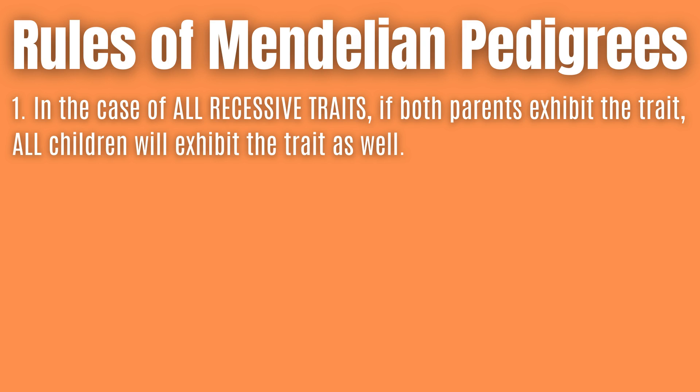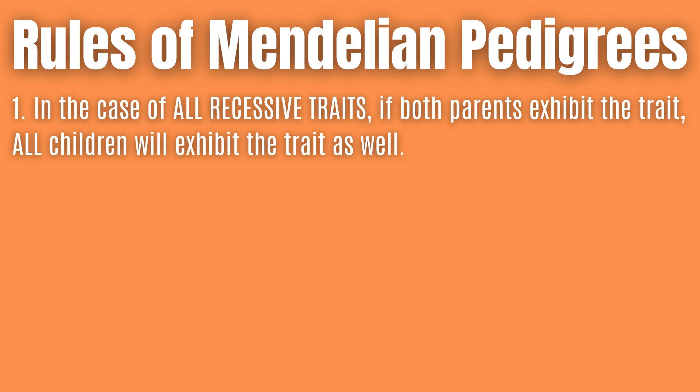Some basic rules of Mendelian pedigrees include that in all cases of recessive traits, if both parents exhibit the recessive trait, all children will also exhibit this recessive trait. The reason for this is shown in the Punnett squares displayed on the screen.